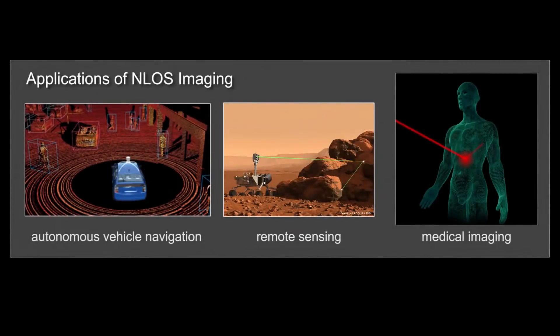Non-line-of-sight imaging, or imaging around corners, enables new capabilities in a wide range of applications, including autonomous vehicle navigation, remote sensing, and medical imaging.